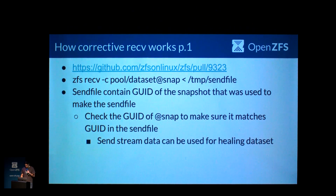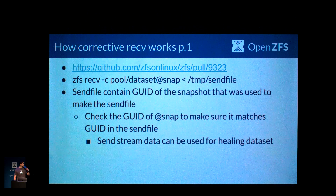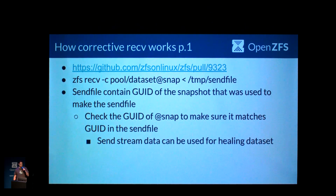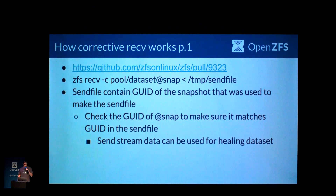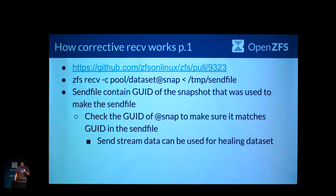What I'm talking about right now is the current state of this work as it is in this pull request. It may change a little bit through reviews, but I anticipate it's going to stay largely intact. You can go right now to this link and see the code. It has a bunch of references to corrective or healing receive — the receive minus h flag was taken by somebody, so this became corrective receive: receive minus c.